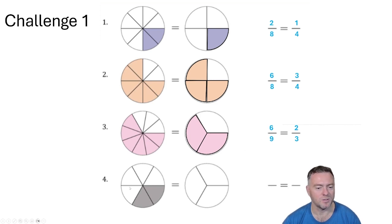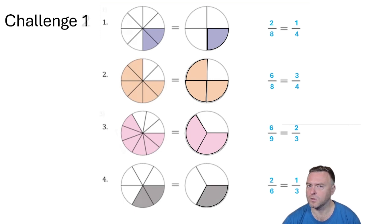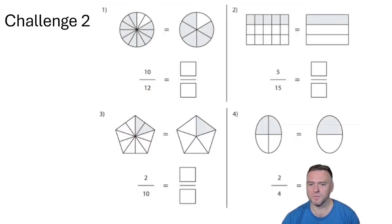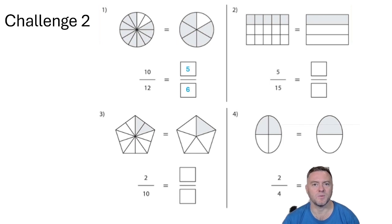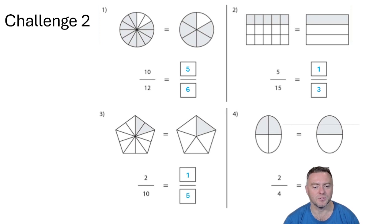And the last visual one has 6 parts total with 2 selected, so it's 2 out of 6, which can be reduced down to a third. Then pause the video and have a go at the next set: 10 out of 12 reduces to 5 sixths; 5 out of 15 reduces to a third; 2 out of 10 reduces to 1 fifth; and 2 out of 4 reduces to a half.